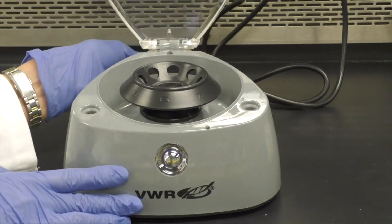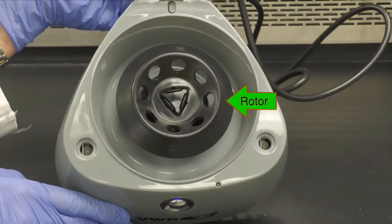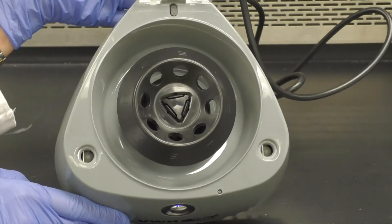As you look into the mini centrifuge, you will see a rotor with 6 holes. When you use a centrifuge, you must balance your sample by placing another balance tube, in this case the one you filled with water, directly across from your sample.